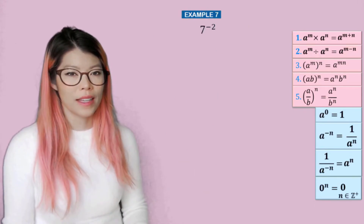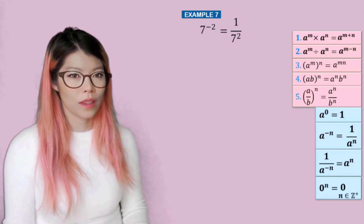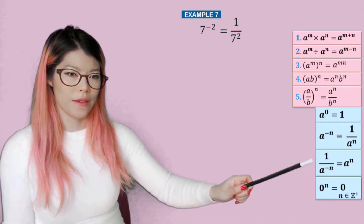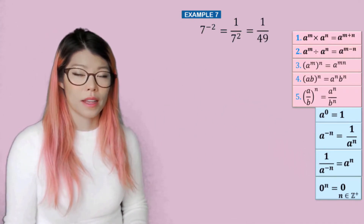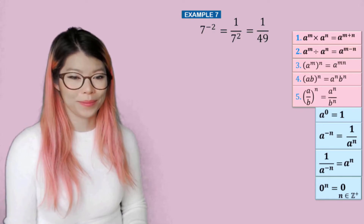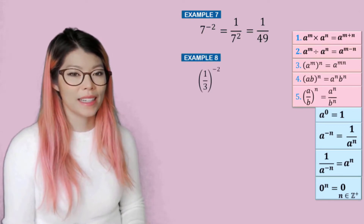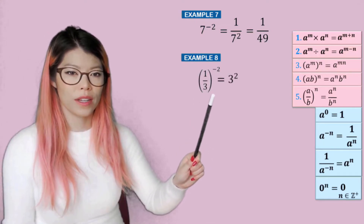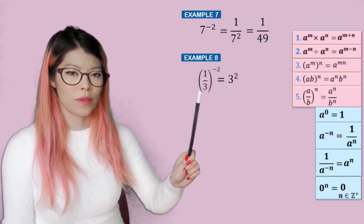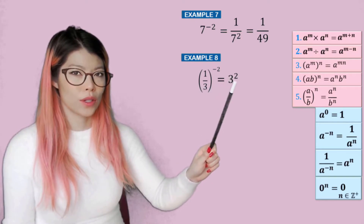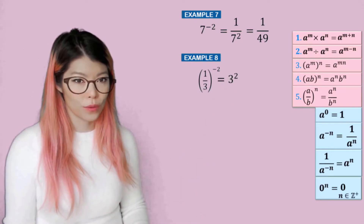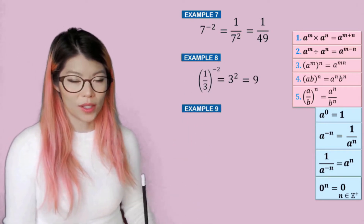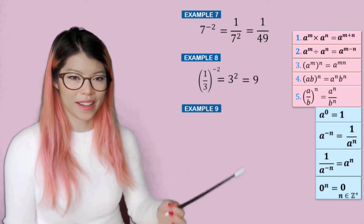Example seven: seven to the negative two. We can write this as one over seven squared — that's like that rule. And that is the same as one over 49. Example eight: what about when we have a fraction? So one will have the negative two as a power and three will have the negative two as a power. And three to the negative two is the same as bringing it to the top as three to the positive two. And one to any power is still one, so that's why we didn't bother writing anything to do with the one.